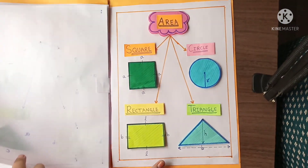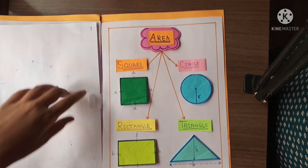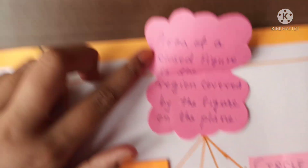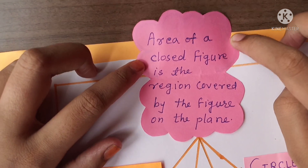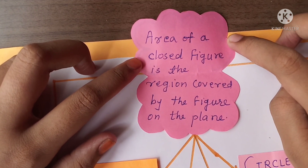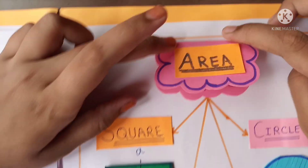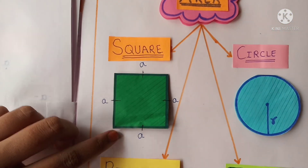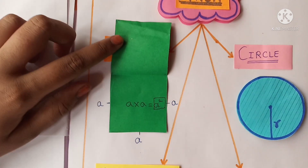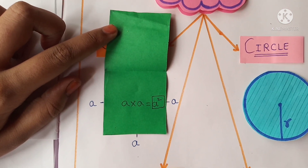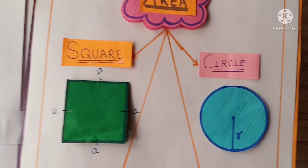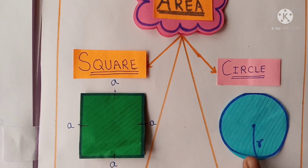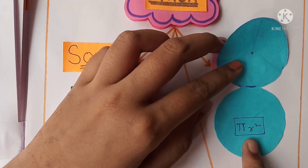And our next topic is area. Here is the definition of area. Area of a closed figure is the region covered by the figure on a plane surface. Area of square — the formula is a into a equals a square. Area of circle — here is the radius. Pi r square.